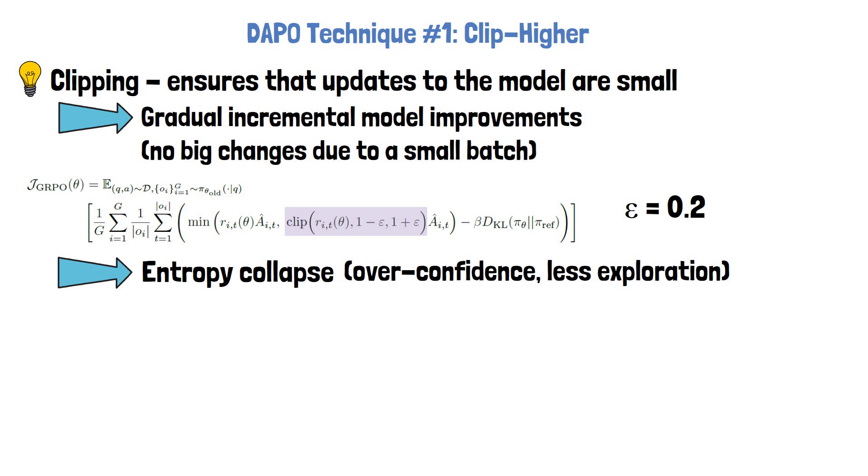If we limit the update size, then for a low probability token to become highly probable, the model needs to be updated several times. For a mathematical intuition, let's look again at the objective of GRPO. We see that we clip r, the policy ratio.